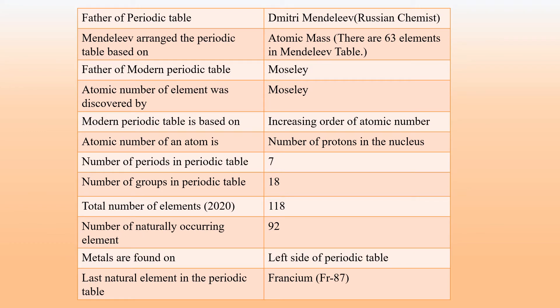The father of the Periodic Table is Dmitri Mendeleev. He was a Russian chemist. Mendeleev arranged the Periodic Table based on atomic mass. In the Mendeleev table, there were only 63 elements. The father of the Modern Periodic Table is Moseley.